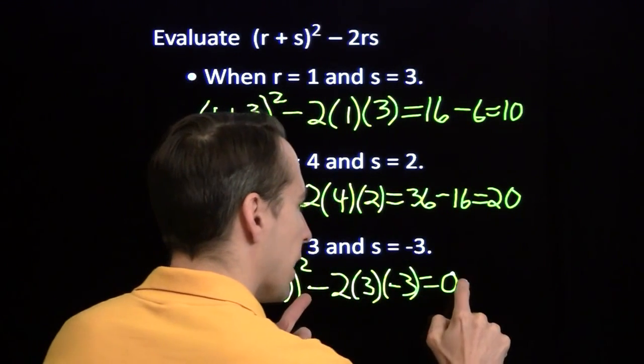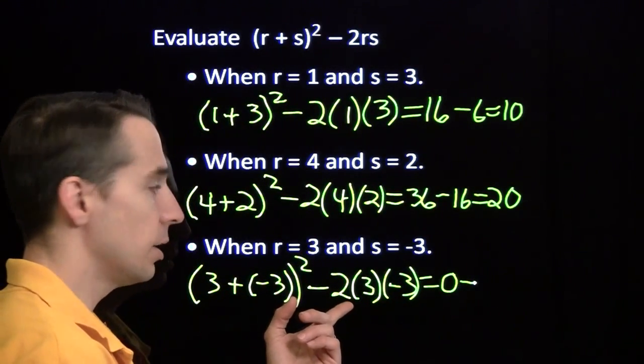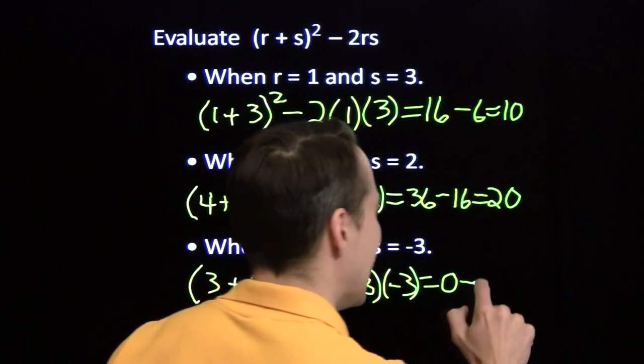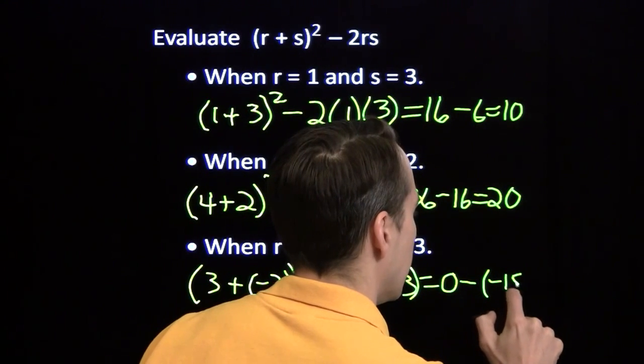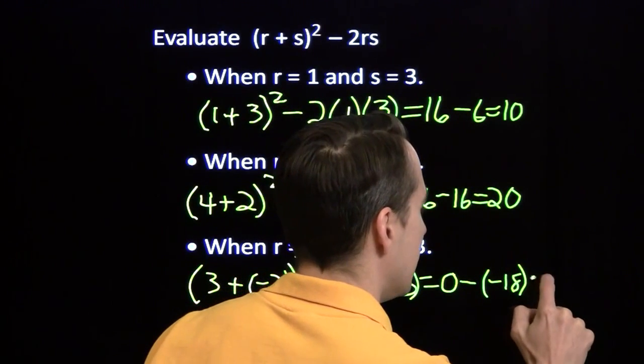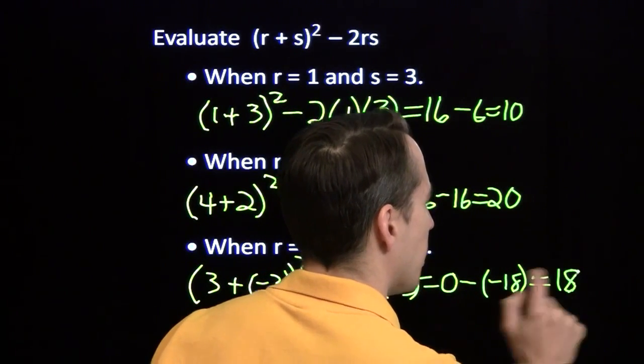And then we're going to subtract. 2 times 3 is 6. 6 times negative 3 is negative 18. Minus a negative 18. That's just positive 18.